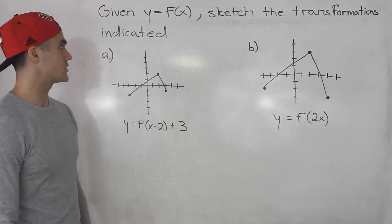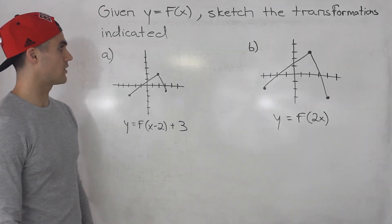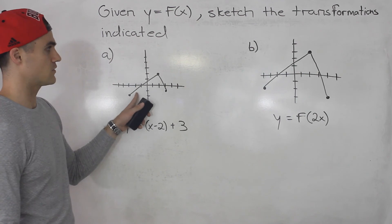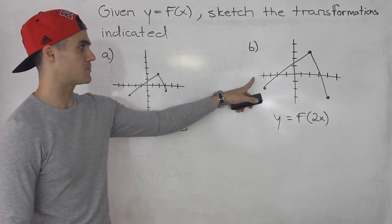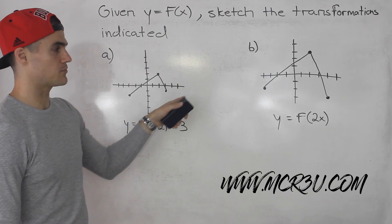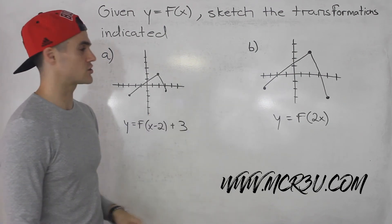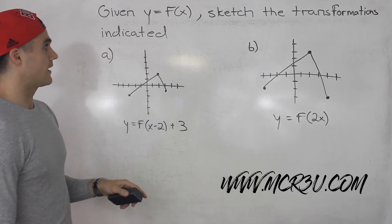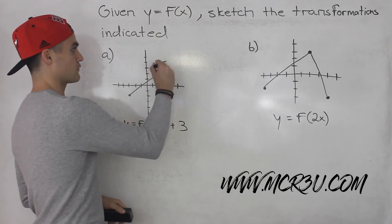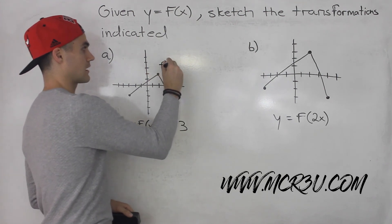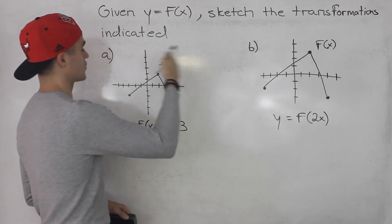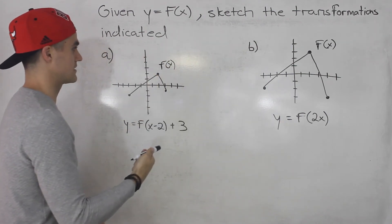Welcome back everybody. In this question we are given two functions f of x — this one for part a and this one for part b. These are two different functions; even though they have the same shape, the coordinates are actually different. Given these two functions, we have to sketch the transformations indicated.